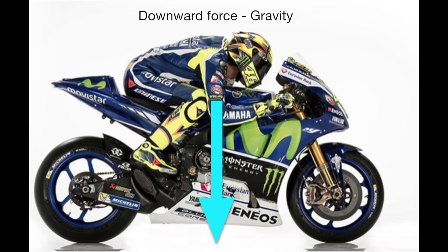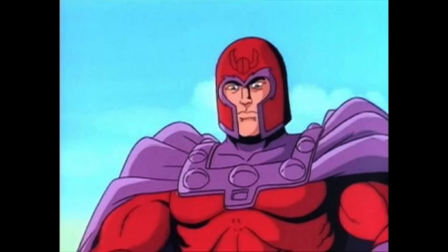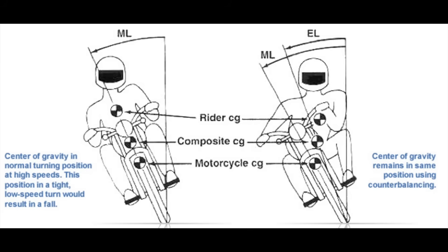We also have the force of gravity, which pulls you and the bike downward at a constant rate. As a rider we don't have any control over this force — unless you're Magneto. Another term we're going to use is center of gravity. This is the point where all the distributed mass and weight of you and the bike converge and equalize. This can change depending on the bike, the rider, and the rider's position on the bike.